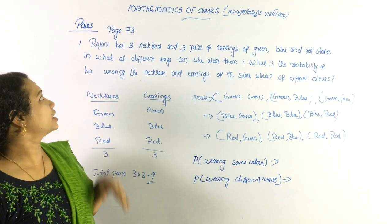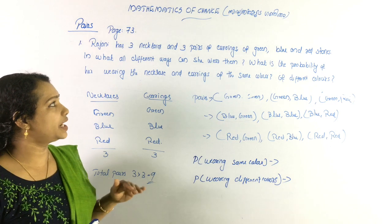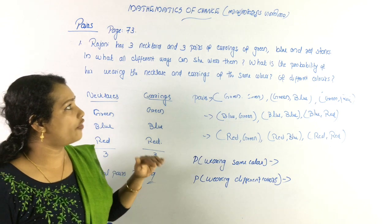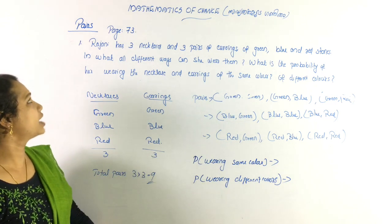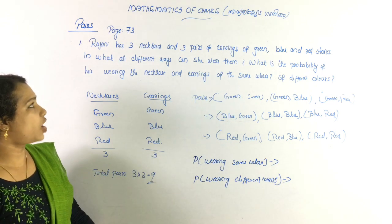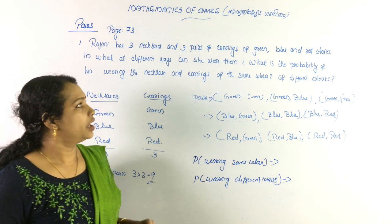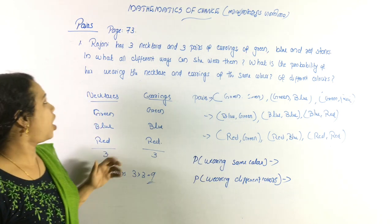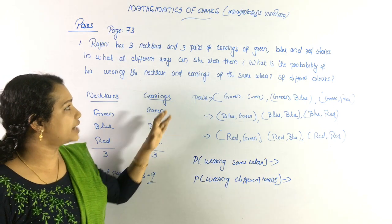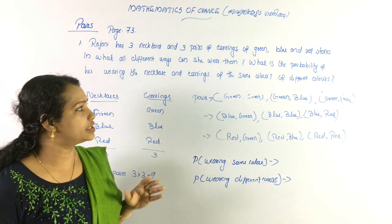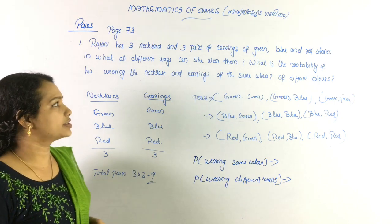First question. Regini has 3 necklaces and 3 pairs of earrings of green, blue, and red stones. In what all different ways can she wear them? What is the probability of her wearing the same color necklace and earrings, and of different colors?